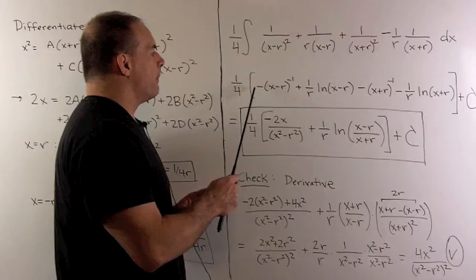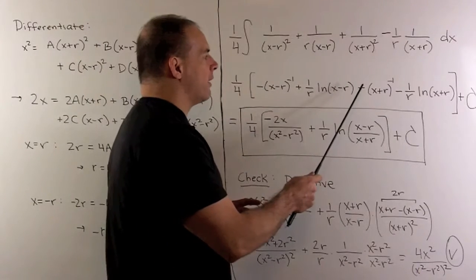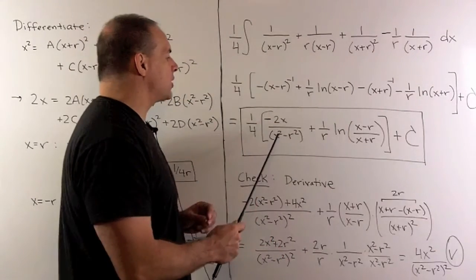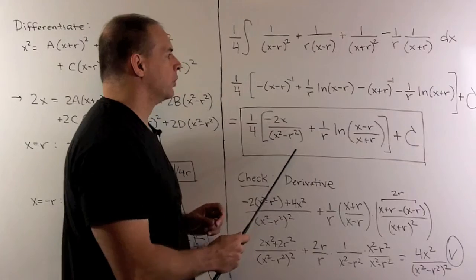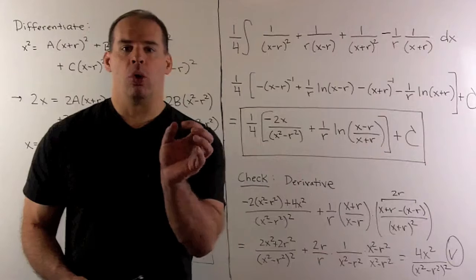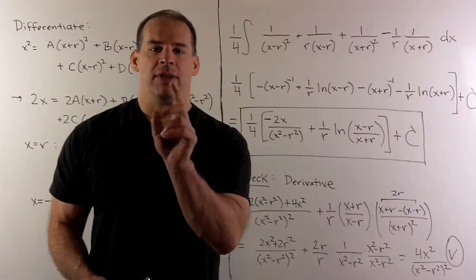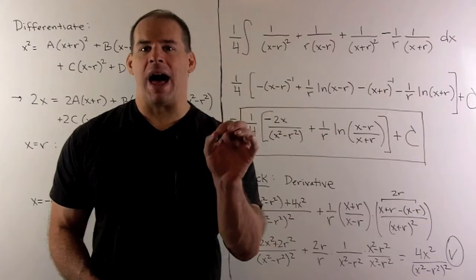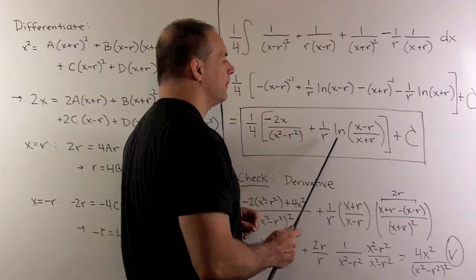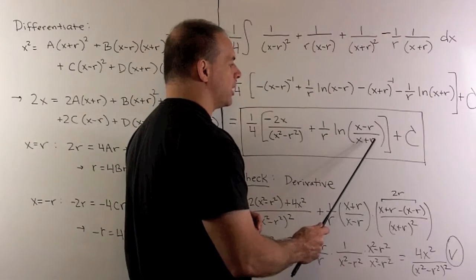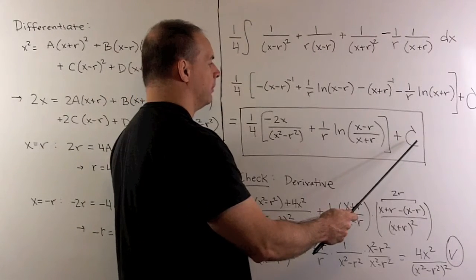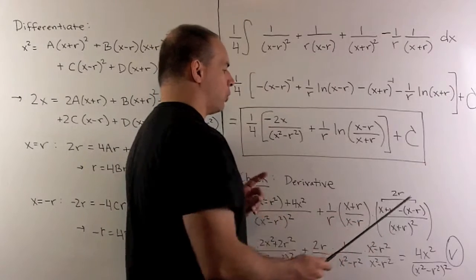Here I have minus 1 over x minus r. Here we have minus 1 over x plus r. When I combine them, we get minus 2x over x squared minus r squared. For the logarithms, we're going to have a difference of logarithms. The rule for difference of logarithms: if I have log a minus log b, that's equal to log of a over b. So we can rewrite this as, we'll have the 1 over r in front, natural log of x minus r over x plus r. We multiply by our 1 fourth, put in our constant of integration. That's going to be our answer for the general formula.